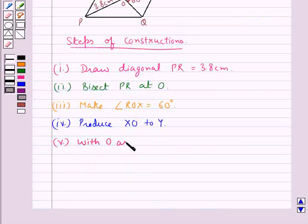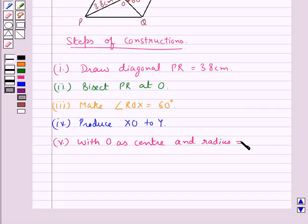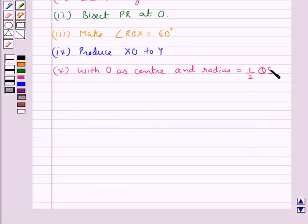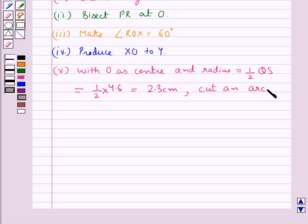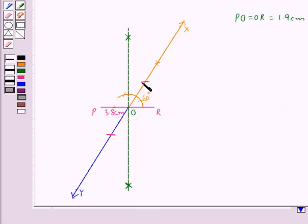Now in the next step, with O as the center and radius equal to half of QS, which is equal to half of 4.6, that is equal to 2.3 cm, we cut an arc on the ray OY and OX. So we have drawn these two arcs on the ray OX and on the ray OY.